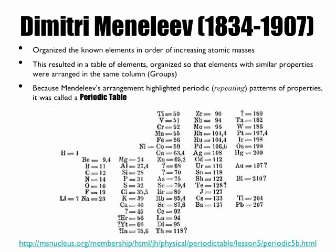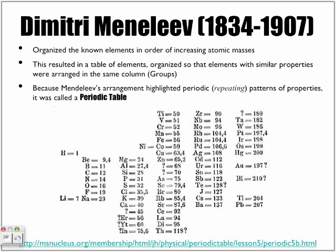Look at some of the elements. So now we know the groups go pretty much up and down, but look at his arrangement. They go in line horizontally. Notice how he listed them, and eventually they came up with what we know as the modern-day Periodic Table.